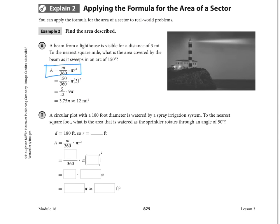For part B, let's fill in what we have there. For the circular plot with a 180-foot diameter, notice diameter is given, so we first want to find the radius by taking half of that. To the nearest square foot this time, we're asked what is the area that's watered as it rotates through an angle of 50 degrees. So 50 is the measure that we're interested in for m.